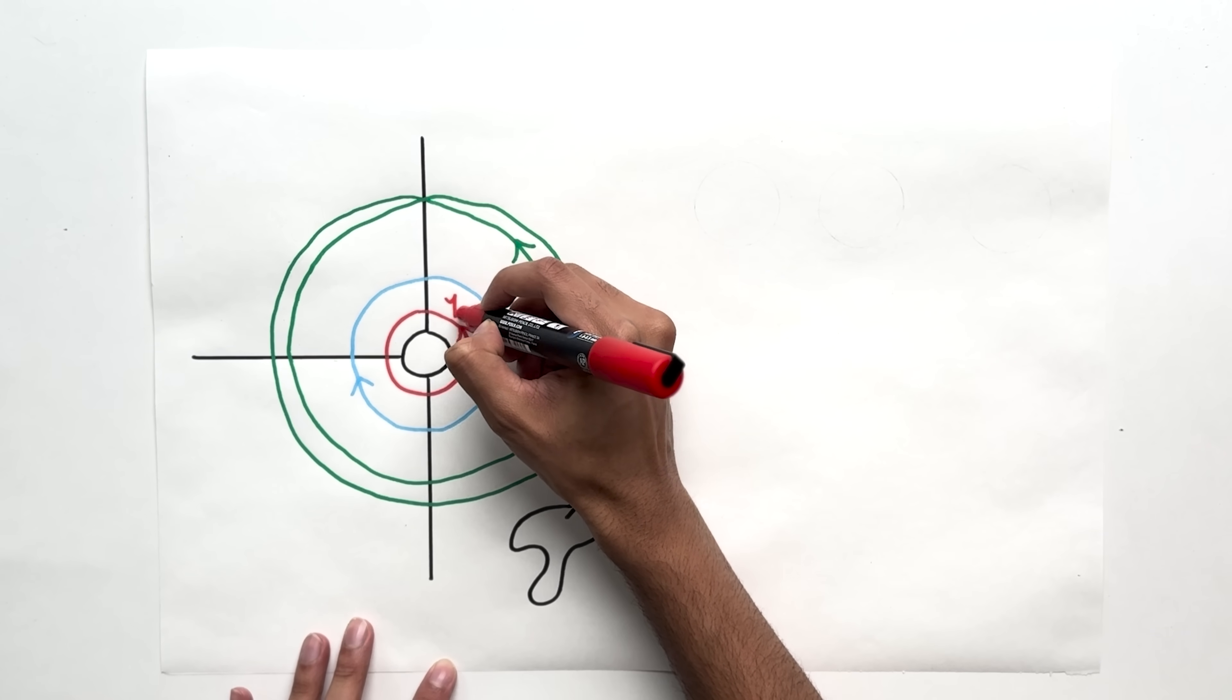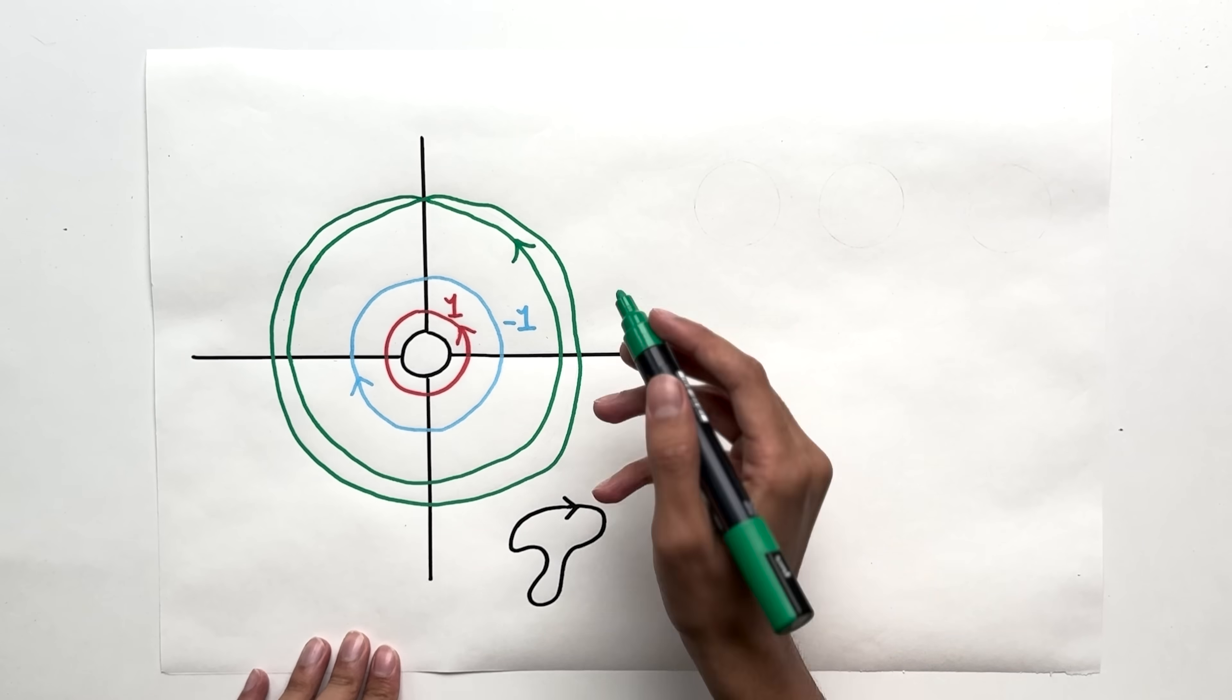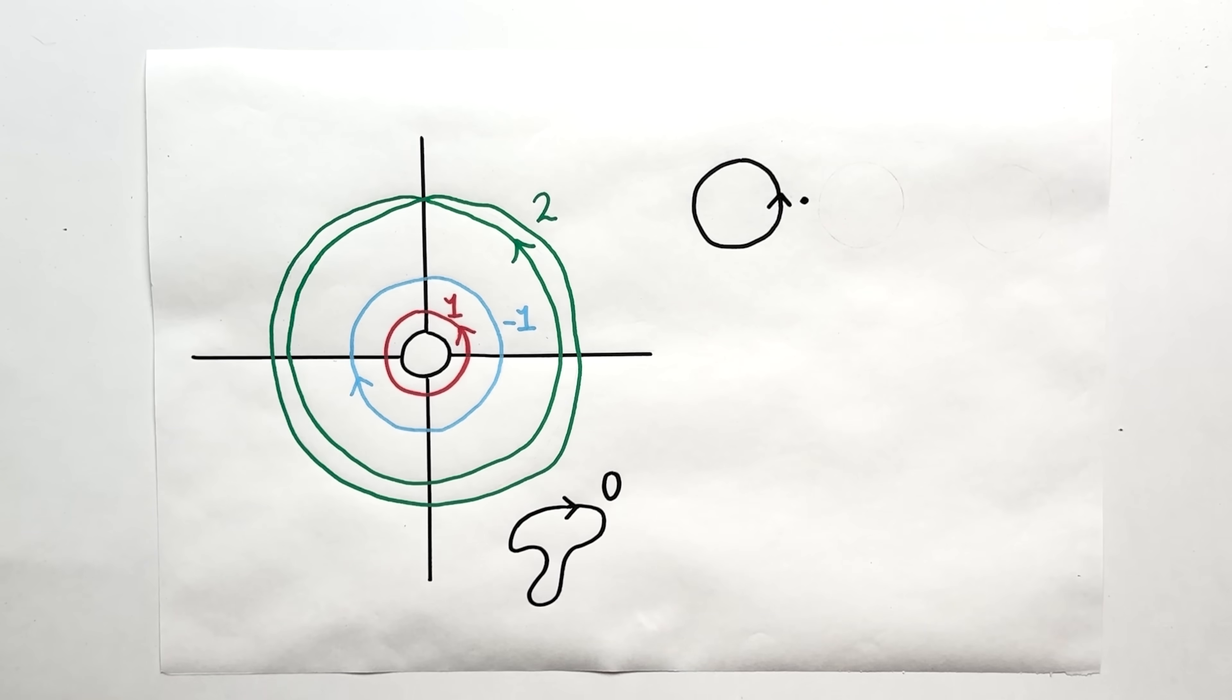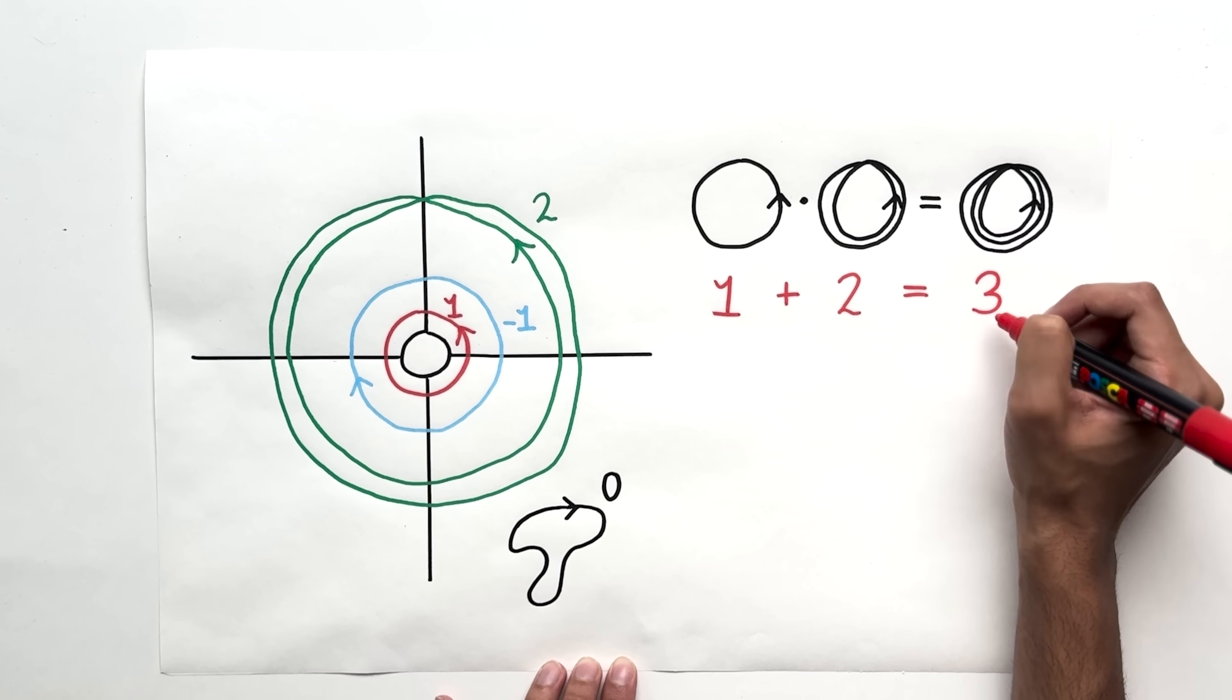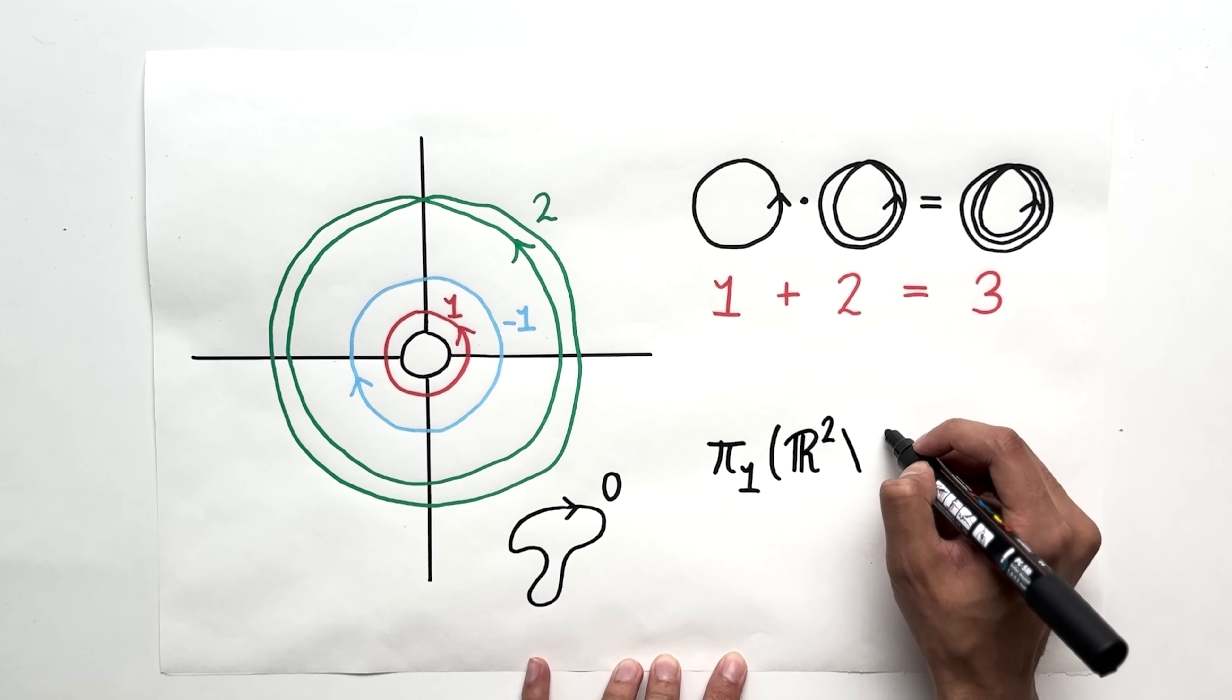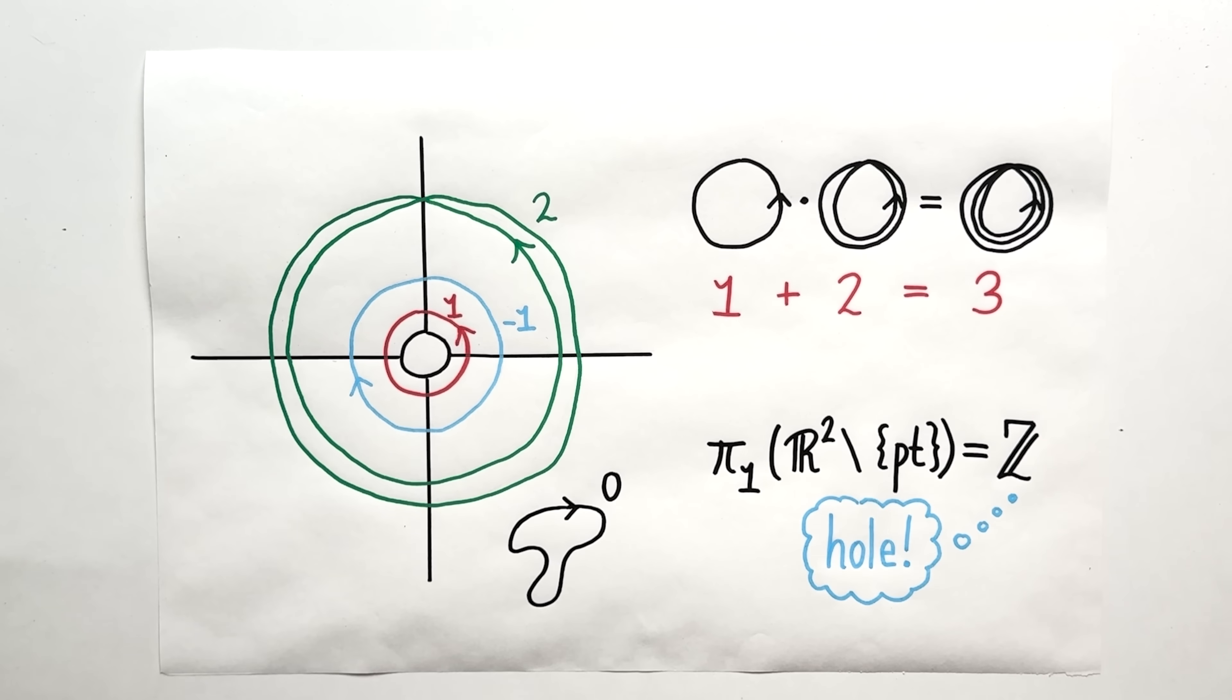Let's label this loop as 1, because it goes around once. Let's label this loop minus 1, because it goes around once in the opposite direction. Let's call this loop 2, and this loop 0. If you multiply the 1 loop by the 2 loop, you're going around 3 times in total, so you get the 3 loop. When you multiply two loops, it's the same as adding the corresponding integers. Therefore, π₁ of the plane minus a point is Z, the set of all integers. The fact that the fundamental group is non-trivial means intuitively that the space has a hole in it.